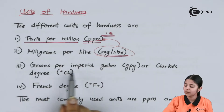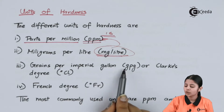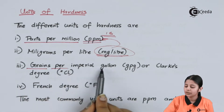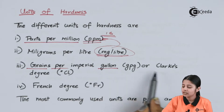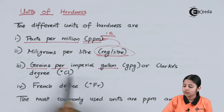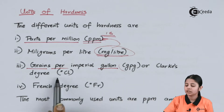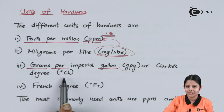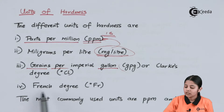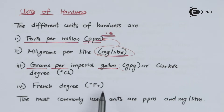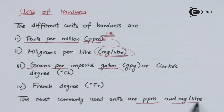Next is Grain per Imperial Gallon, also known as GPG. GPG stands for Grain per Imperial Gallon. Next is Clark's degree — GPG is also known as Clark's degree and it's represented by the degree sign with CL. Next is French degree, also represented by a degree sign with FR. But the most commonly used are PPM and mg per liter.